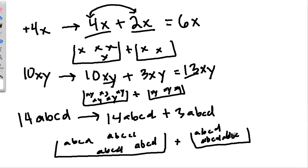Oops, a, b, c, d. And now, 14 plus 3 is 17abcd. So adding, when you're adding these monomials, you're just adding the numbers, the coefficients that are next to the variables.